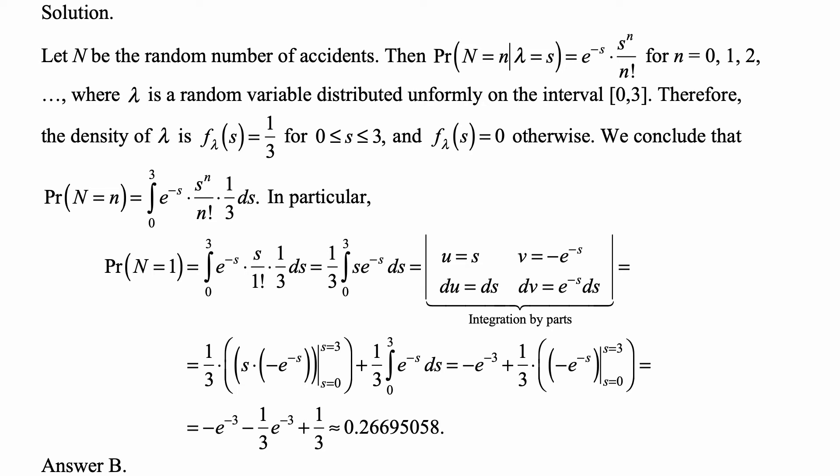And the specific values of parameter lambda are denoted by s to not confuse the random variable lambda with specific values of that random variable. I wish they used the capital lambda as the notation for the random variable, but they didn't in the problem, so that's why I write lambda lowercase for the random parameter and then for its specific values s.